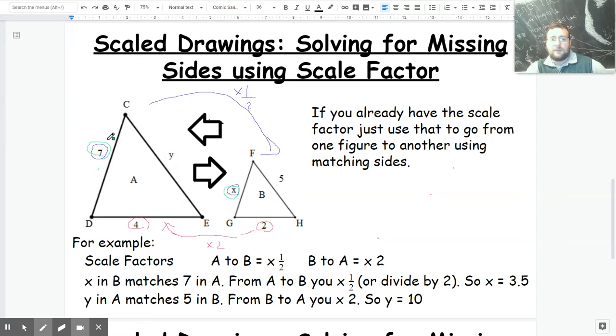If I already figured out that the scale to go down this diagram is half, all I have to do is multiply that 7 by that scale. So to go from 7 to X, I have to multiply by half.